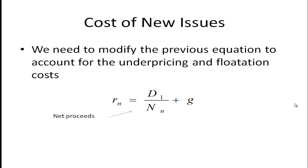If we want to figure out the cost of new issues of common stock, we need to modify the previous equation. It basically looks the same, except instead of calling it Rs we're going to call it Rn — the cost of new issues. And instead of dividing D1 by P0, we divide by Nn, the net proceeds that the firm receives from issuing these shares. So instead of getting the market price, they get less because the shares may be discounted or underpriced, as well as those flotation costs, plus the growth rate of dividends.